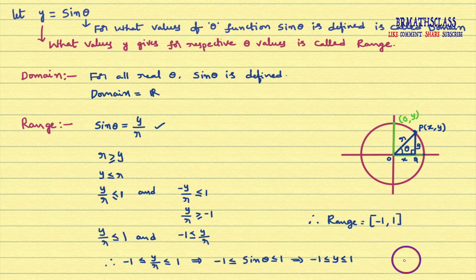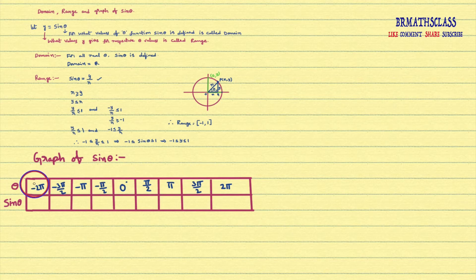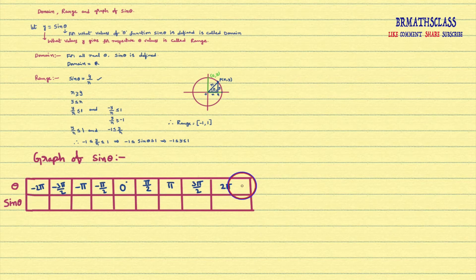What is the range of sine function? Range of sine function is closed interval minus 1 comma 1. Now we will see the graph of sine function. I consider some theta values in between minus 2 pi to plus 2 pi. As the domain of this function is all real numbers, we cannot write all the values, so I consider some values in between minus 2 pi to plus 2 pi.